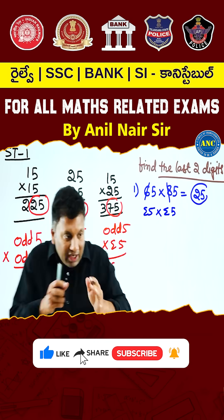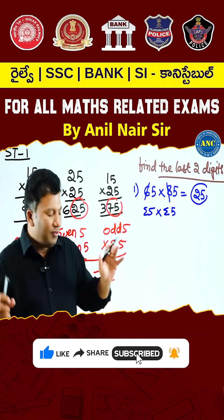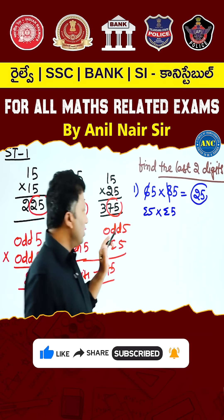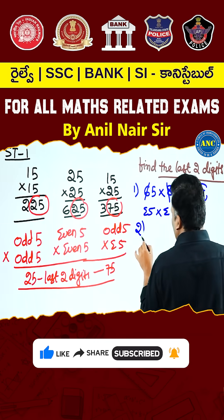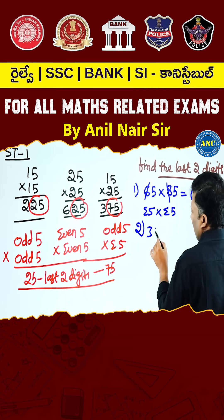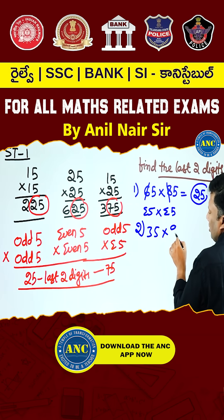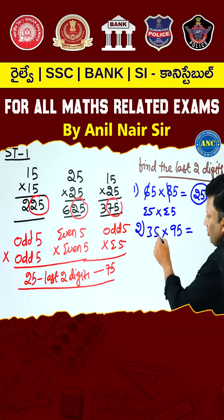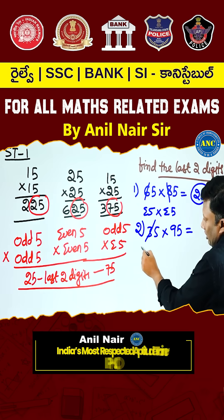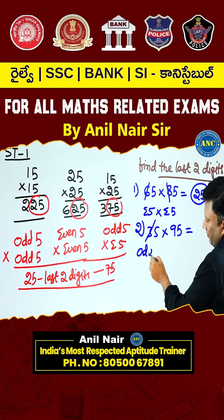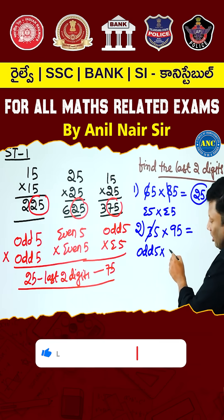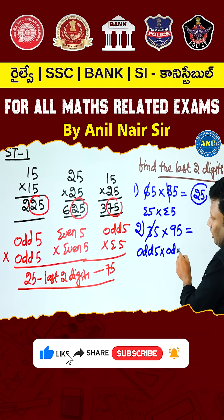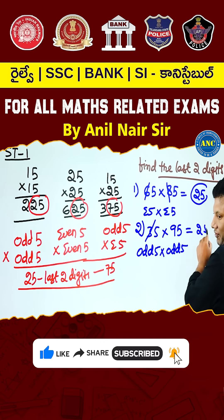We are not interested in the entire number; we are only interested in the last two digits. Next: 35 into 95. What are the last two digits? 3 is an odd number, 9 is an odd number. Odd 5 into odd 5 — what is the last two digits? 25.